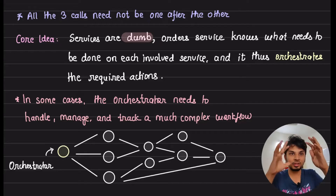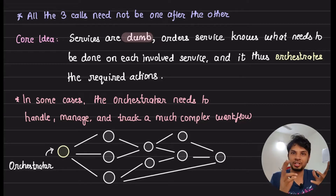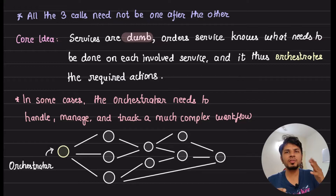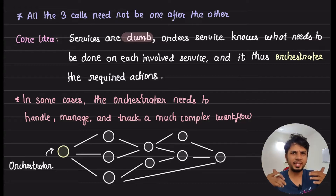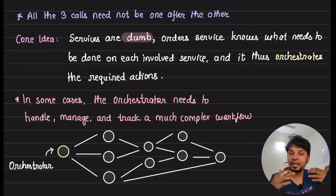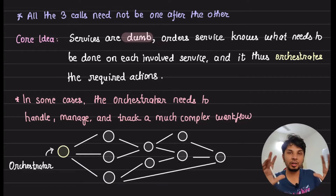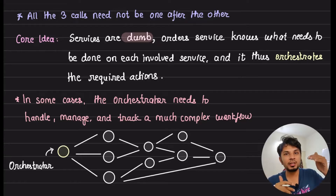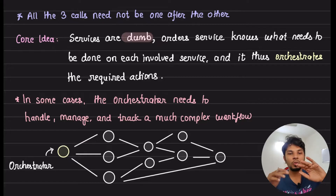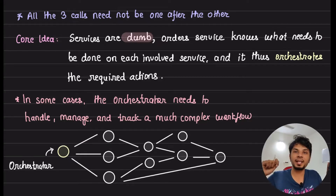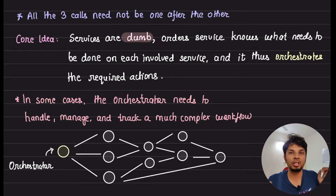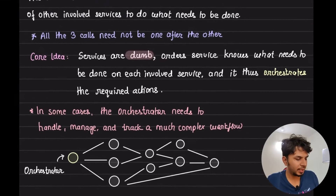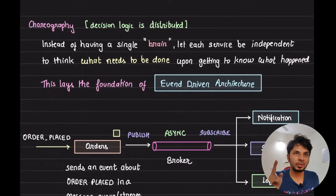The analogy for orchestration comes from a gigantic orchestra, where the conductor tells each musician when to play — now you play the guitar, now you play the drums. That's the core idea behind the orchestration pattern. The workflow we designed was just a one-level example, but in real-world complex businesses, workflows can become much more intricate and you need an orchestrator to manage that.